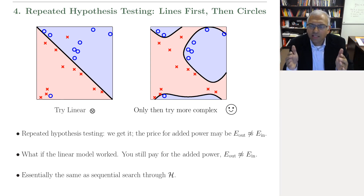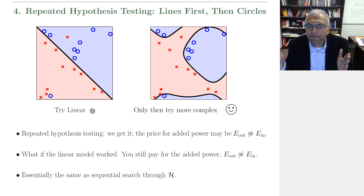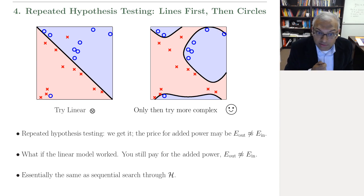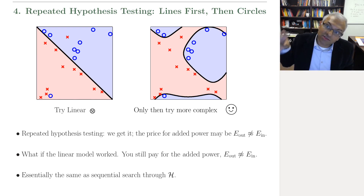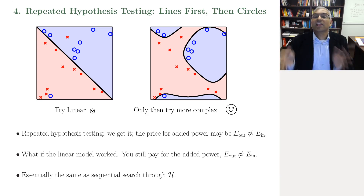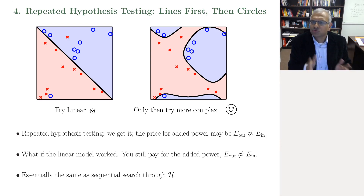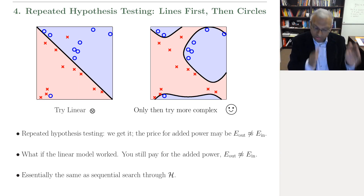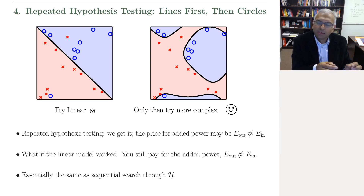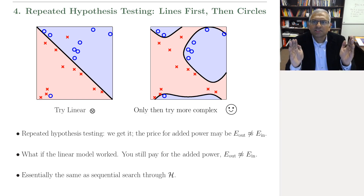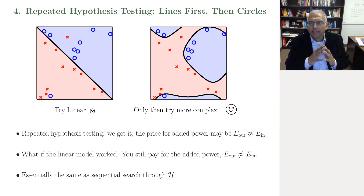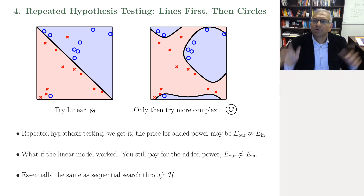The Hoeffding error bar gives you: what are the chances you get in trouble for that full experiment? If the linear model worked, you still have to pay the price for the fact that you had the choice to go into the complex circle model. That's what most people don't realize — even though it looks like you stopped at the linear model, you still have to pay the price for what you would have done had you failed. The error bar protects you against the chances that you get in trouble from this full experiment.